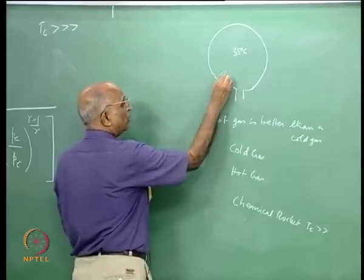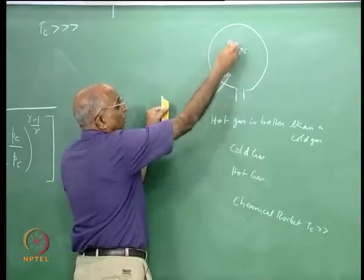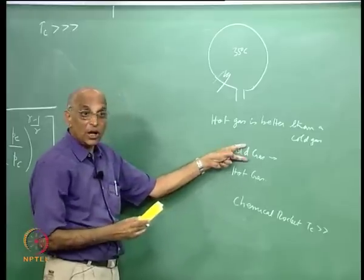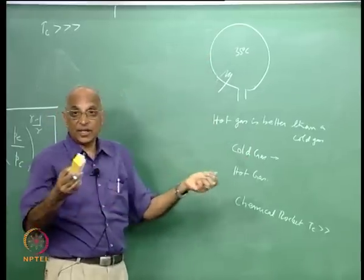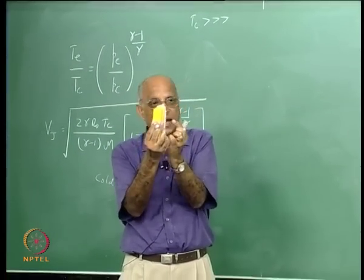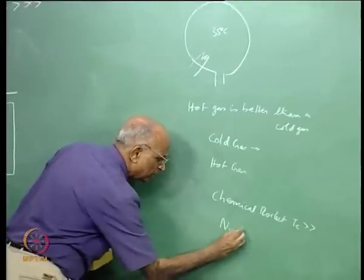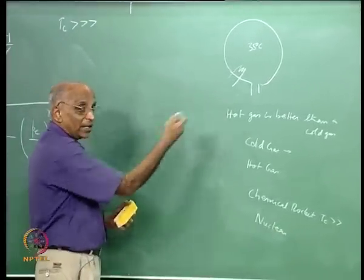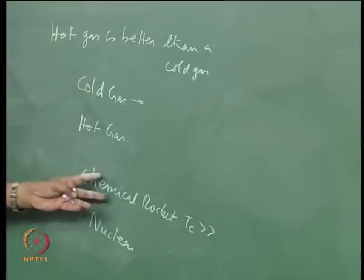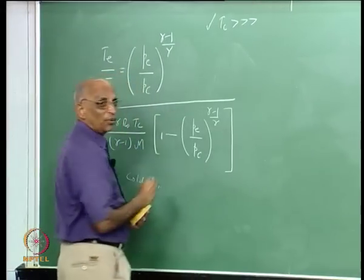In a hot gas rocket, I could put a resistance wire to heat the gases and allow them to come out. Cold gas rockets are also used in satellites where chemical reactions cannot be allowed — I just allow gas in a chamber, let it expand, and get a thrust. You could also have nuclear reactions to get even higher temperatures and higher jet velocity. So the classifications are: cold gas rockets, hot gas rockets, chemical rockets, nuclear rockets. Temperature is one of the primary parameters.